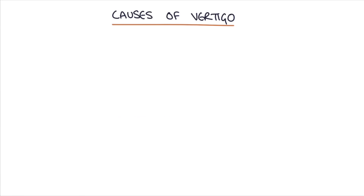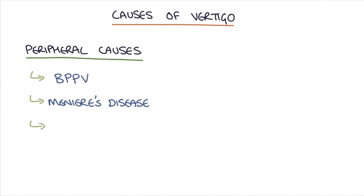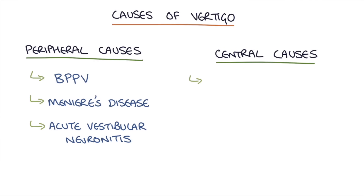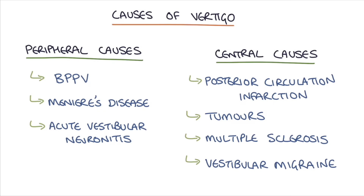In summary, the top peripheral causes to remember are benign paroxysmal positional vertigo, Meniere's disease and acute vestibular neuronitis. The top central causes to remember are posterior circulation infarction, tumours in the cerebellum or brain stem, multiple sclerosis and vestibular migraine.